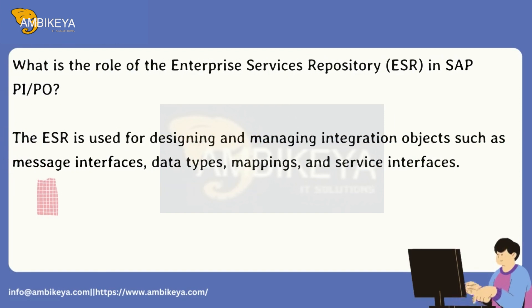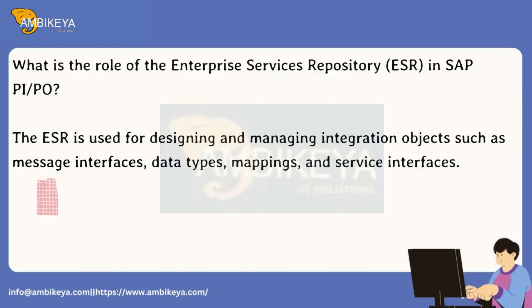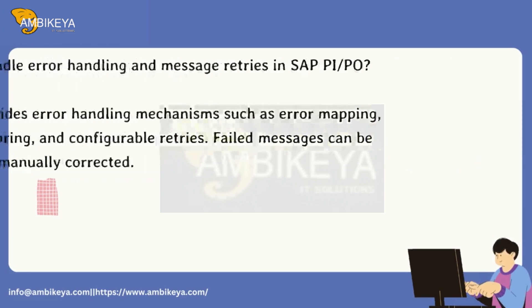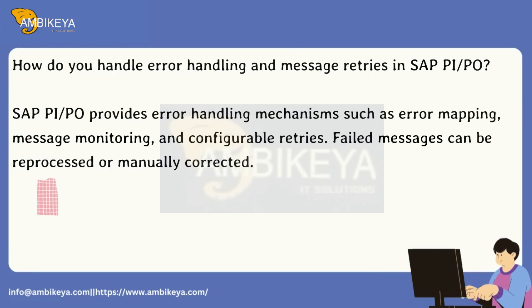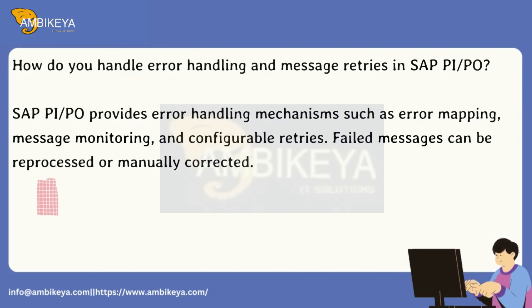What is the role of the Enterprise Services Repository, ESR, in SAP PI/PO? The ESR is used for designing and managing integration objects such as message interfaces, data types, mappings, and service interfaces. How do you handle error handling and message retries in SAP PI/PO? SAP PI/PO provides error handling mechanisms such as error mapping, message monitoring, and configurable retries. Failed messages can be reprocessed or manually corrected.